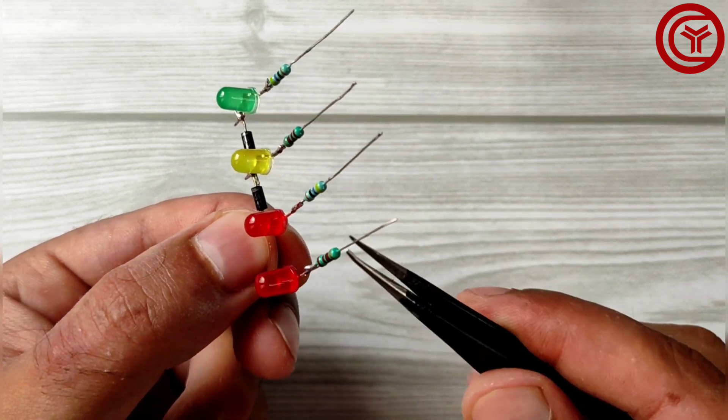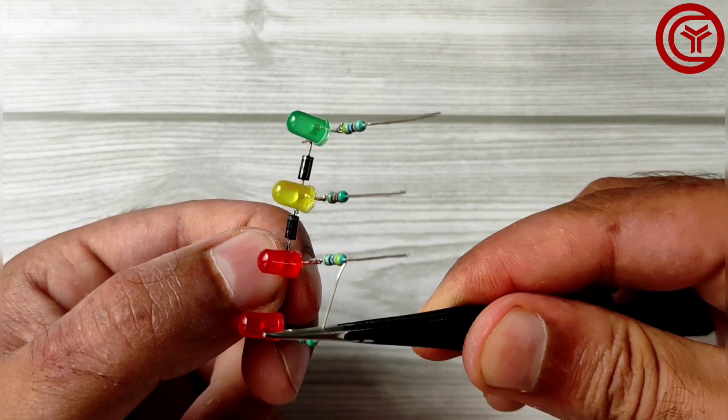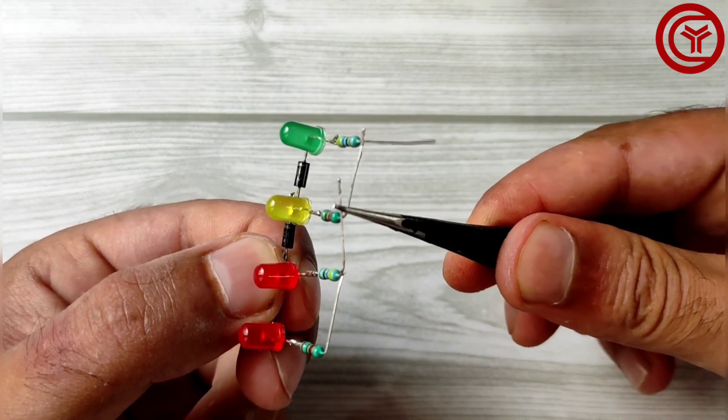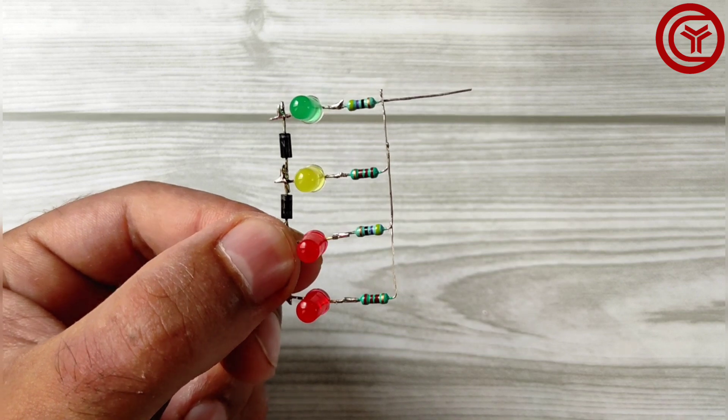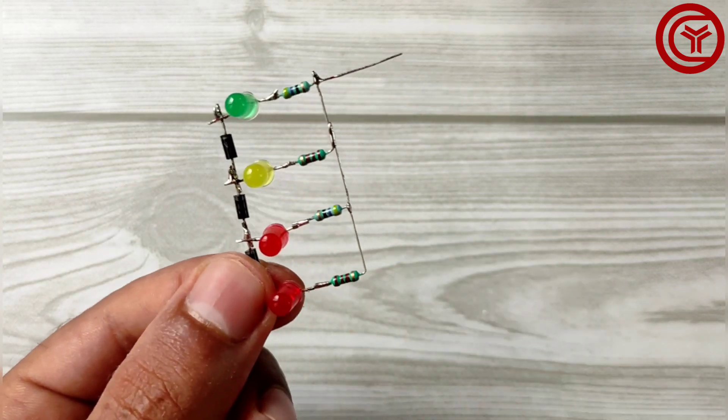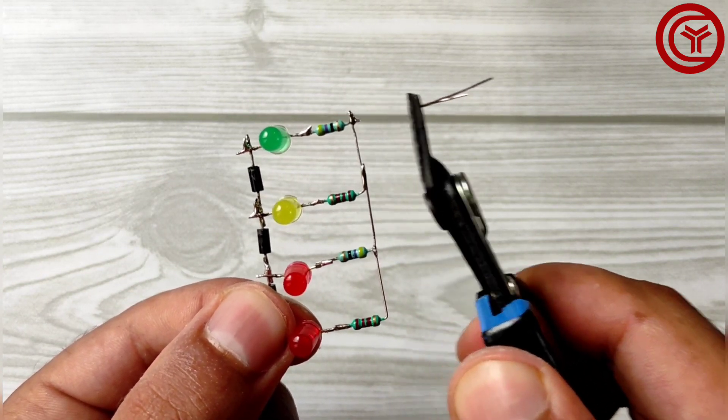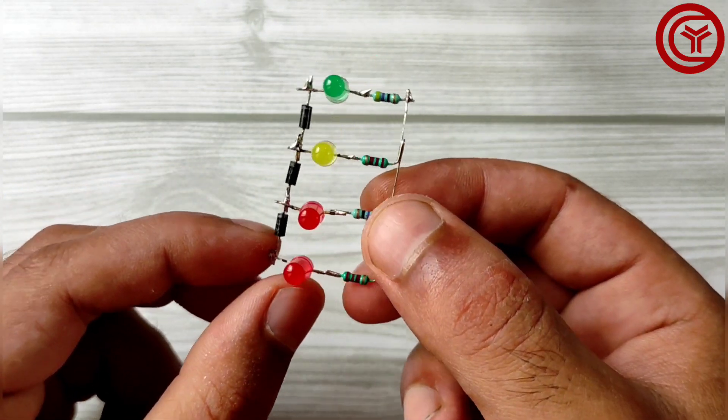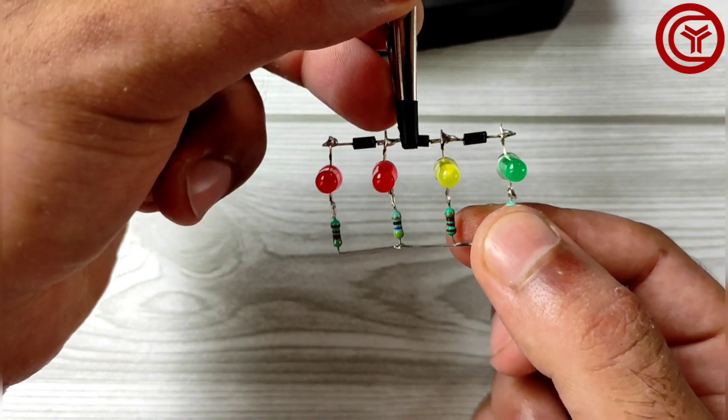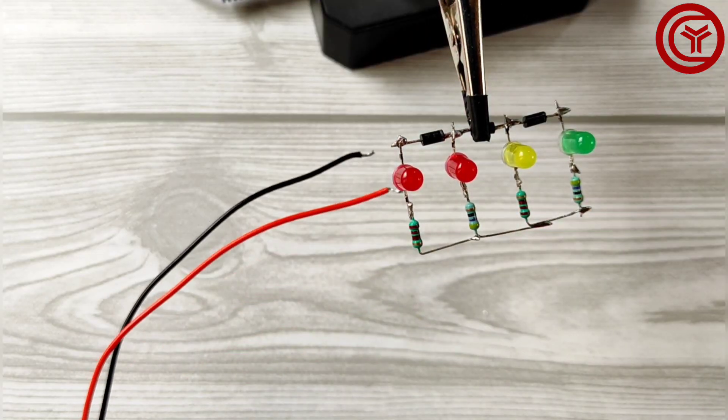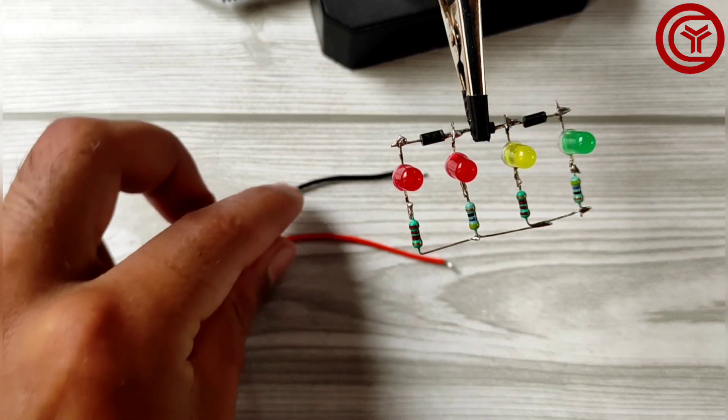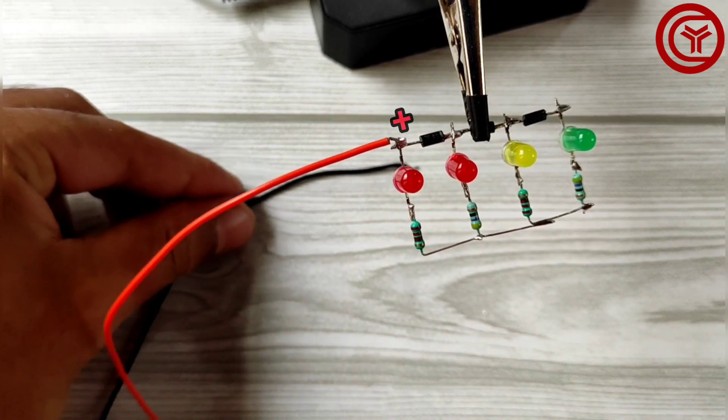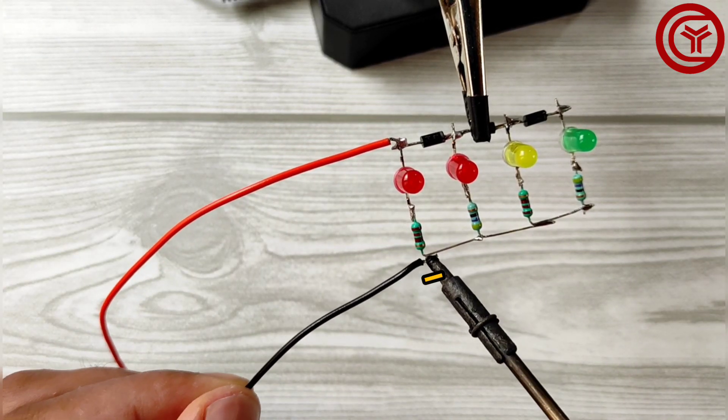Now bend and connect all ends of resistors. Solder positive wire on diode positive, and solder negative wire with resistors.